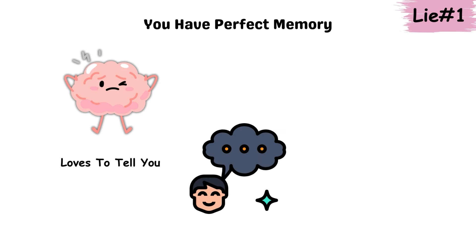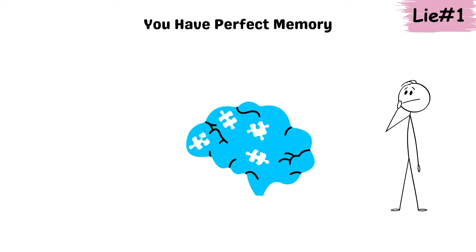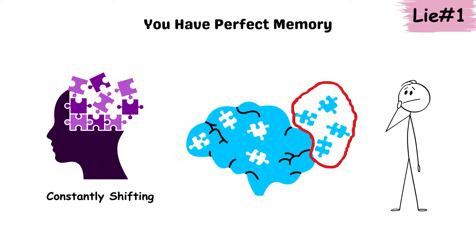Lie 1. You have perfect memory. Your brain loves to tell you that you remember things exactly as they happened. But in reality, memory is more like a puzzle with missing pieces, constantly shifting.